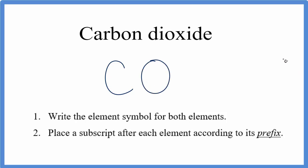And now we need to look at our prefixes. We have di, and if you remember di, like a pair of dice, that's two. So we put that after the oxygen to show there's two oxygens, and that's the formula for carbon dioxide, CO2. Note that we don't write a one after the carbon. That's not necessary.